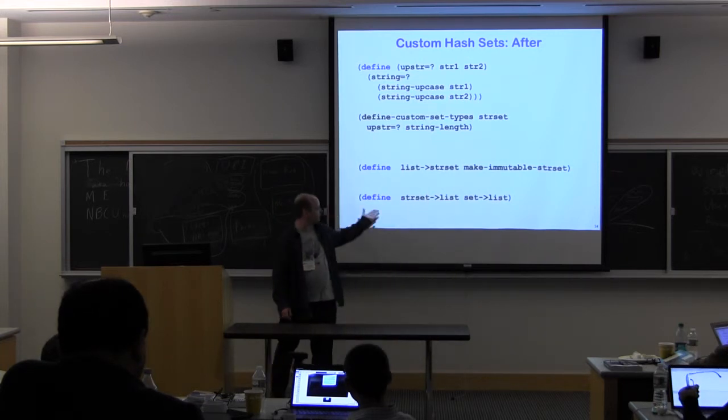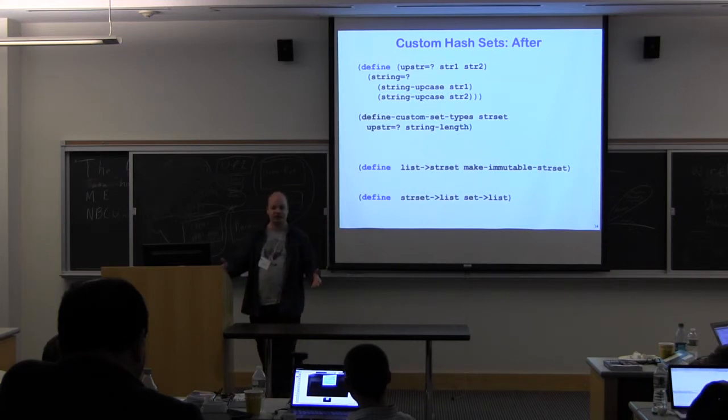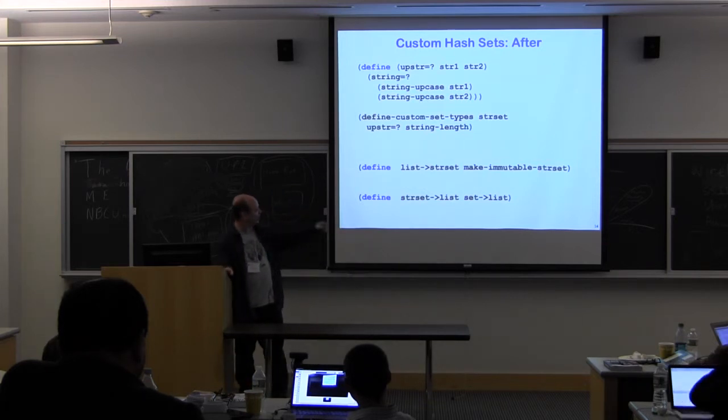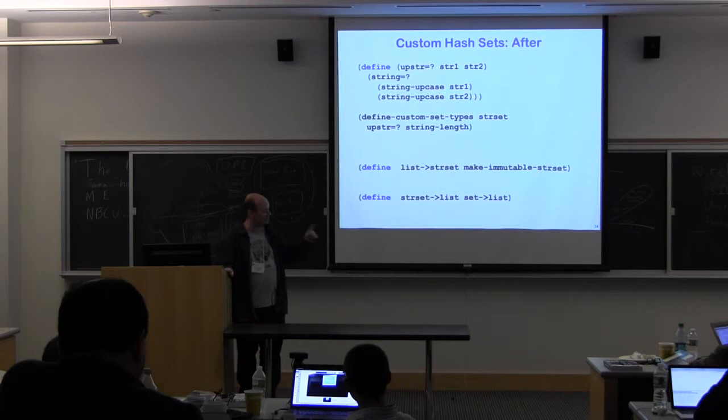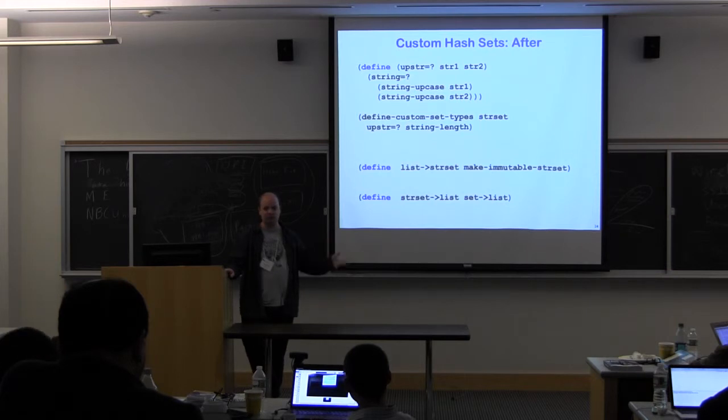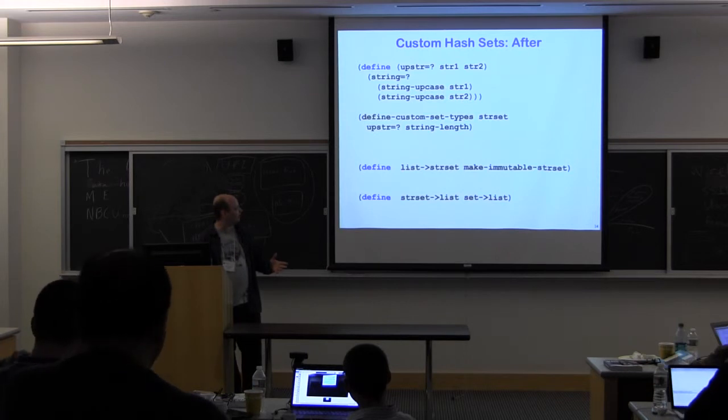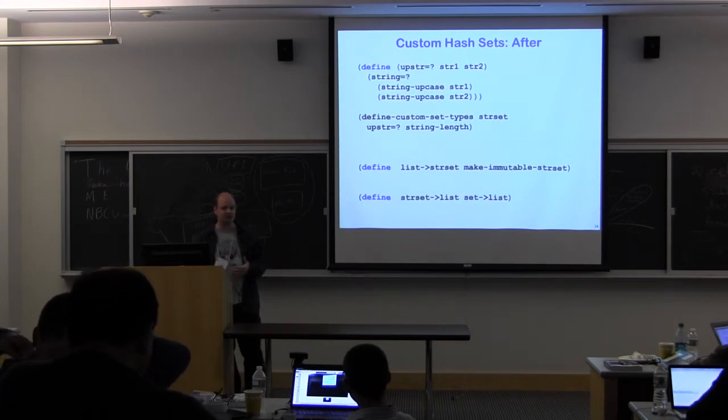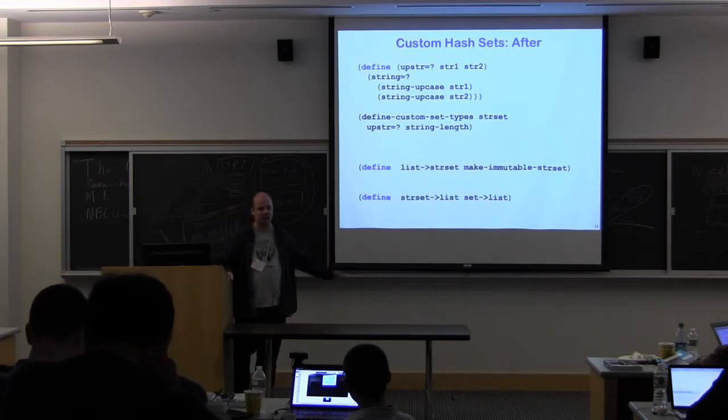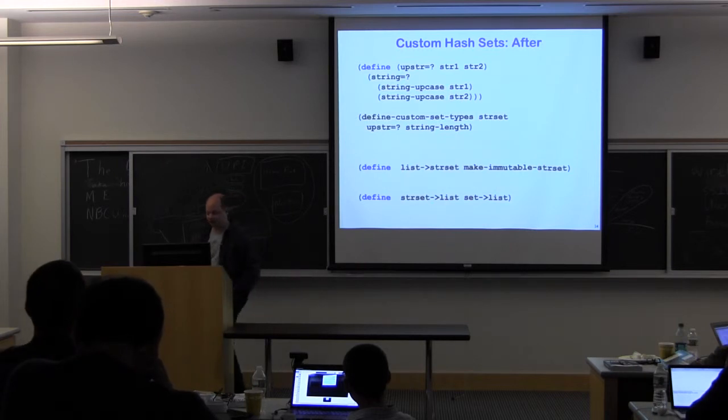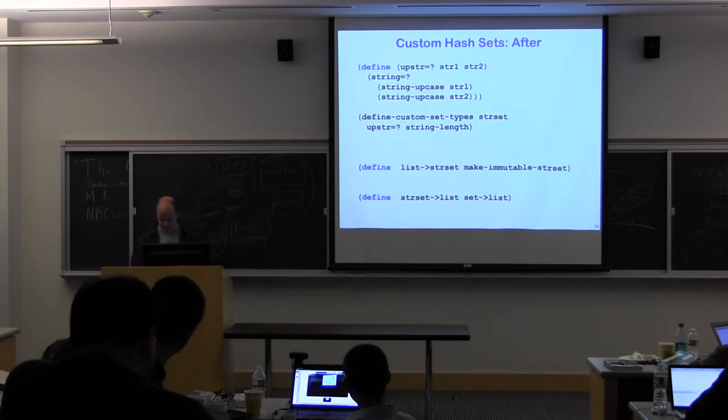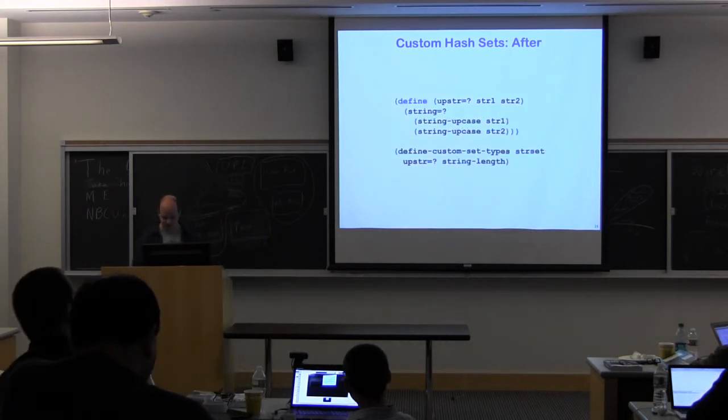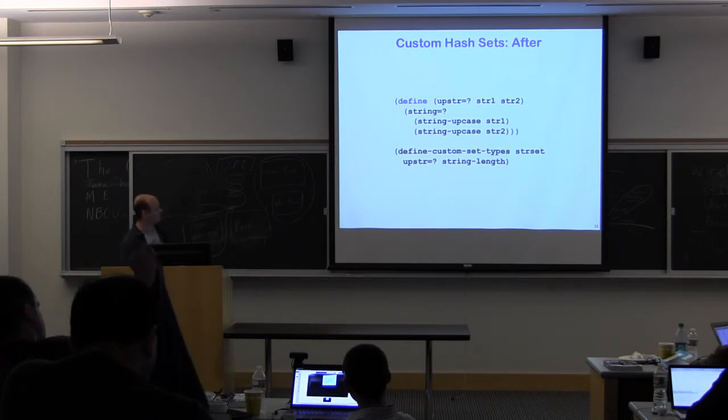So the two I've used here is you get make-immutable-str-set, and to convert to a list you just use the generic set->list. So for make-immutable-str-set you're going to get nine names like that across the three each of immutable, mutable and weak, and three each of equal, eq, and eqv. So you can create string sets in all of those varieties, just with one line of declaration. And so it's just that short function if we don't rename things.